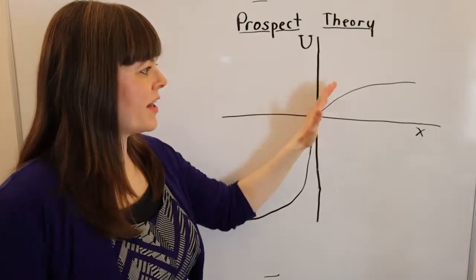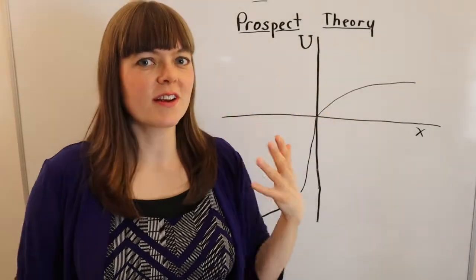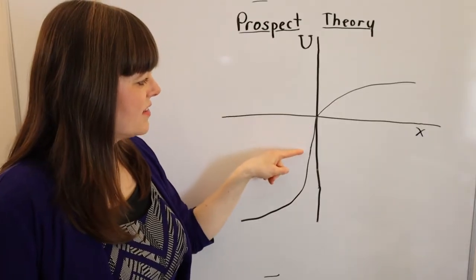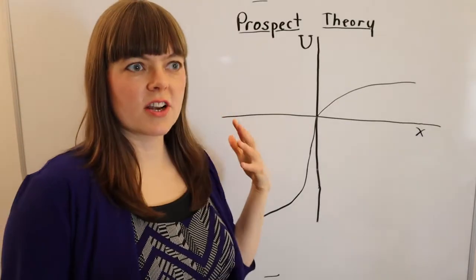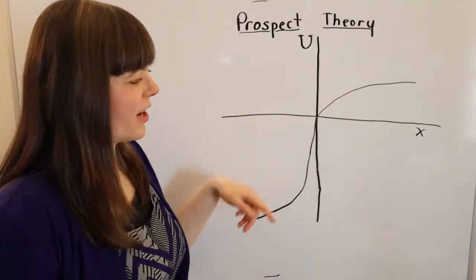Economists have known for many years that in the positive quadrant, utility functions have diminishing marginal utility, and all prospect theory really does is it adds the shape of the utility function as people generally behave in the negative quadrant, in this third quadrant down here.